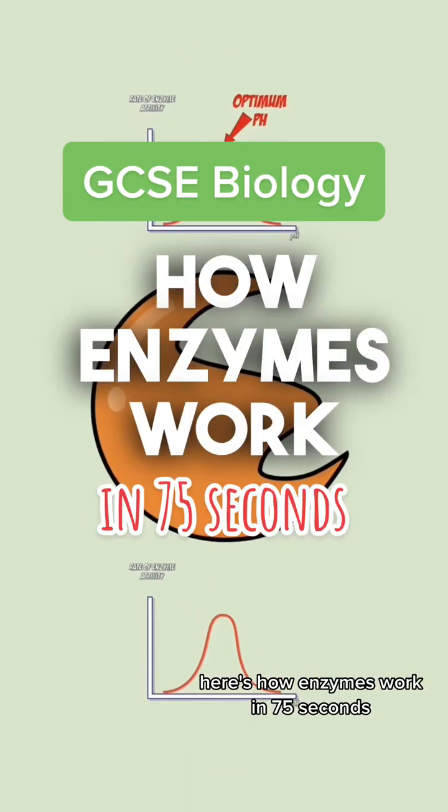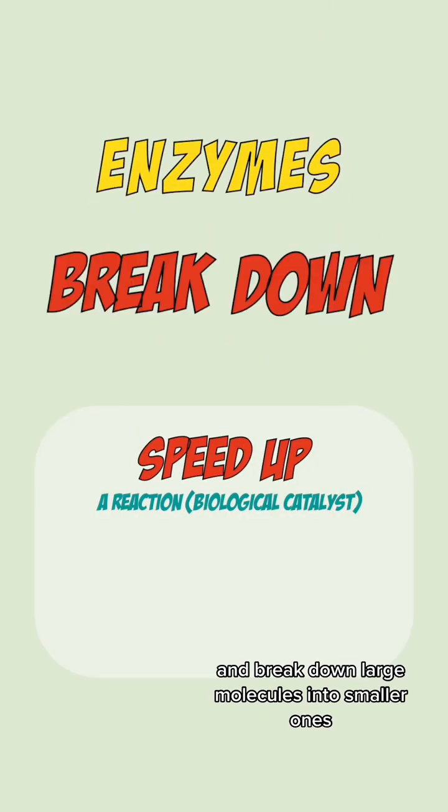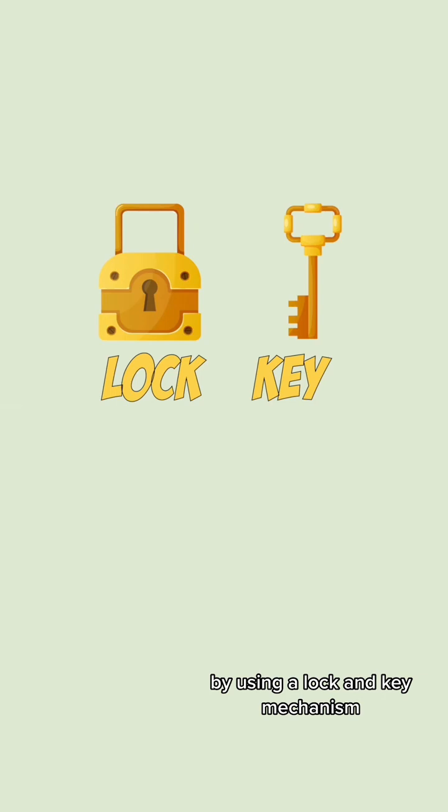Here's how enzymes work in 75 seconds. Enzymes are proteins that speed up a reaction and break down large molecules into smaller ones by using a lock and key mechanism.